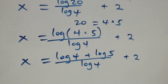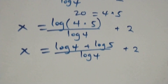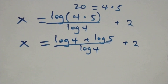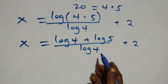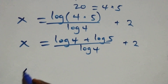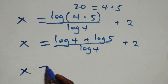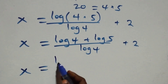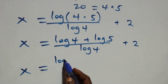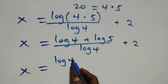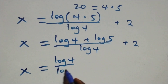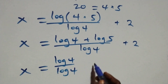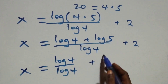We separate this into two fractions: x equals log 4 over log 4, plus log 5 over log 4, plus 2.